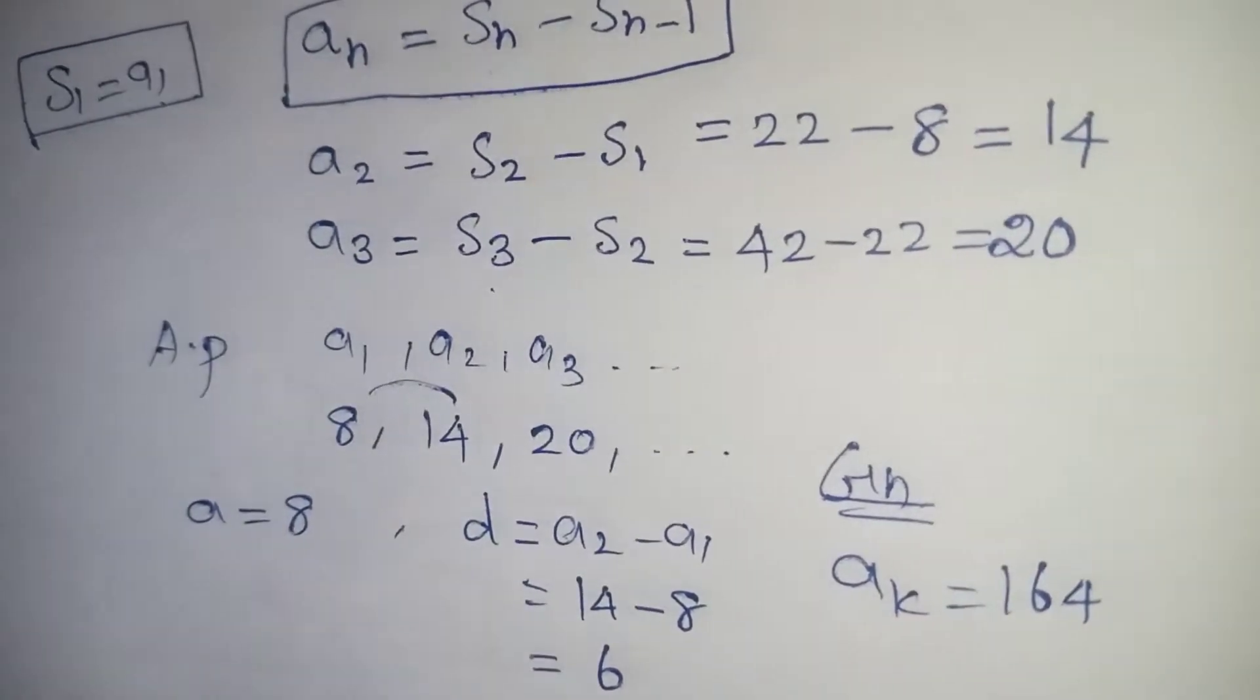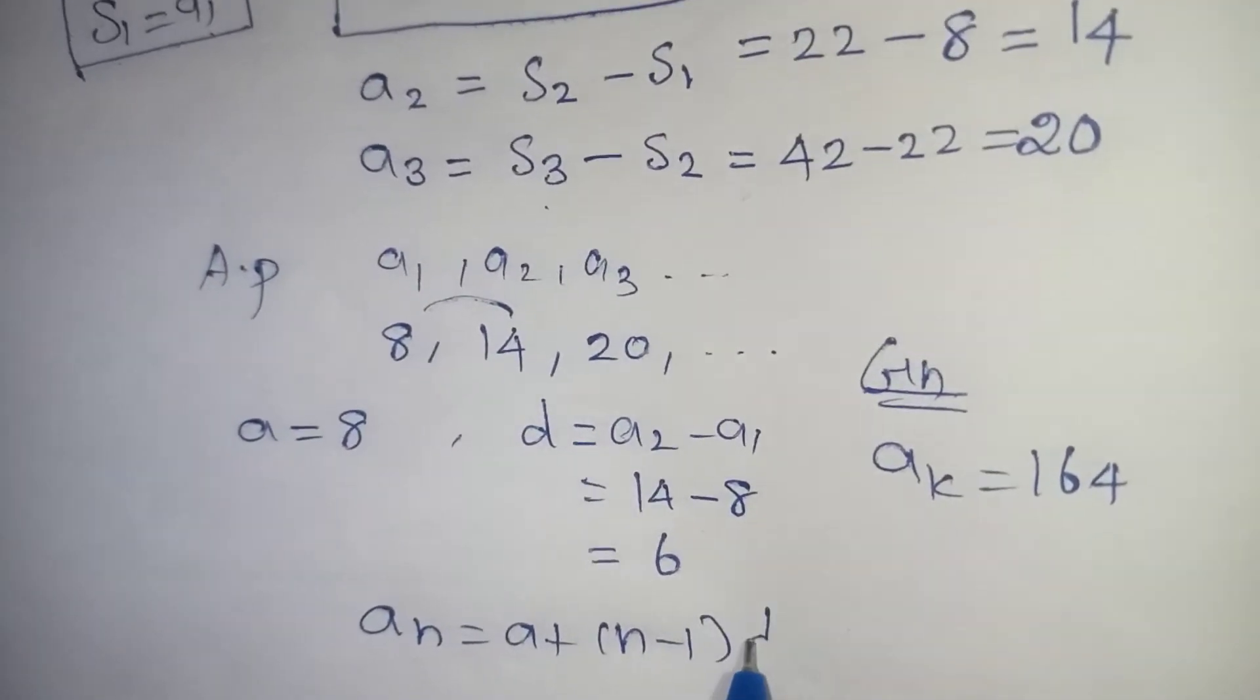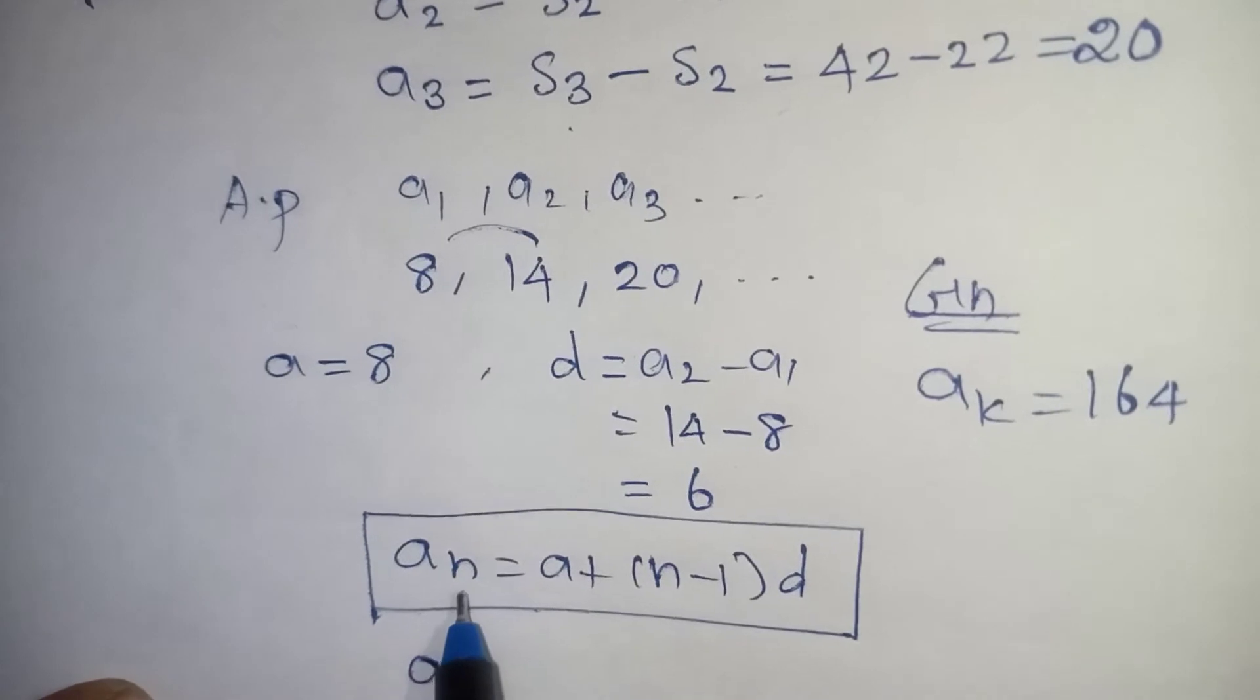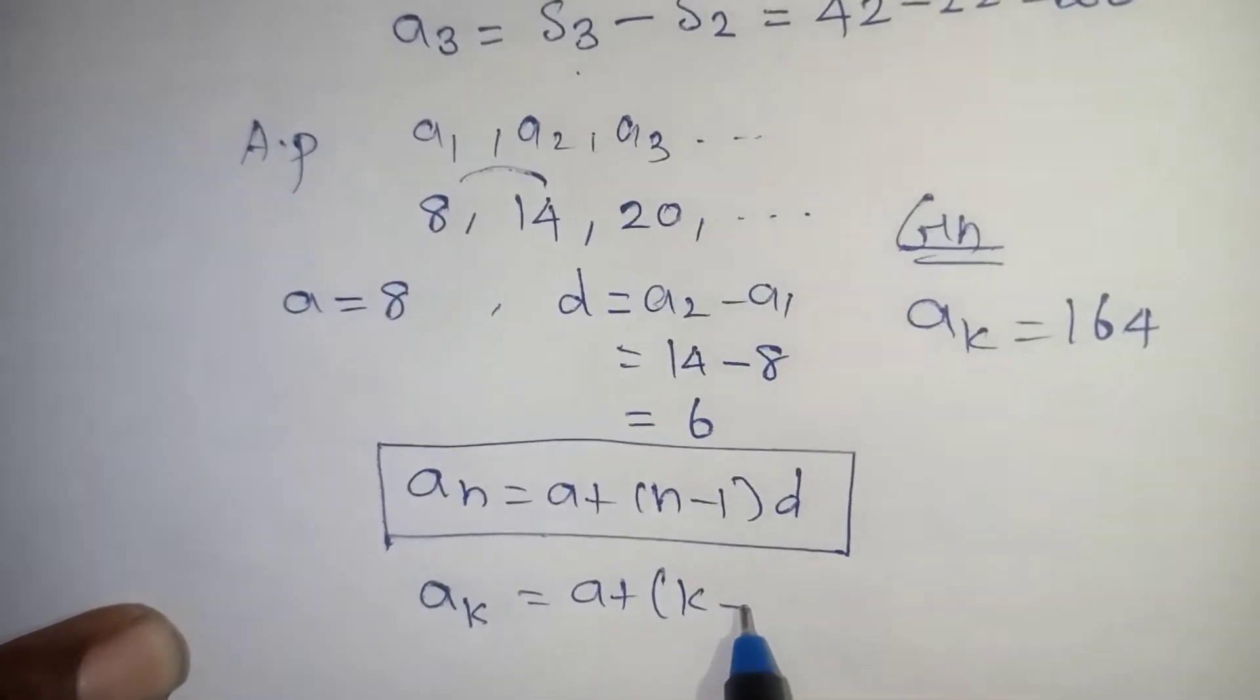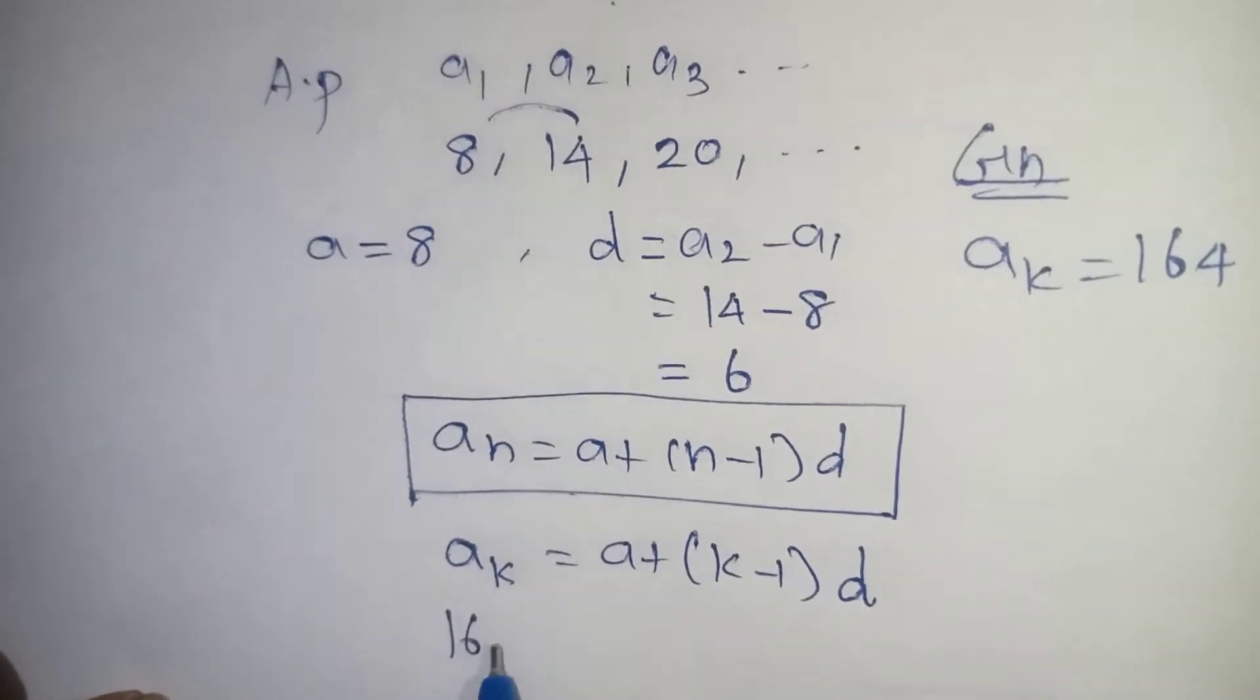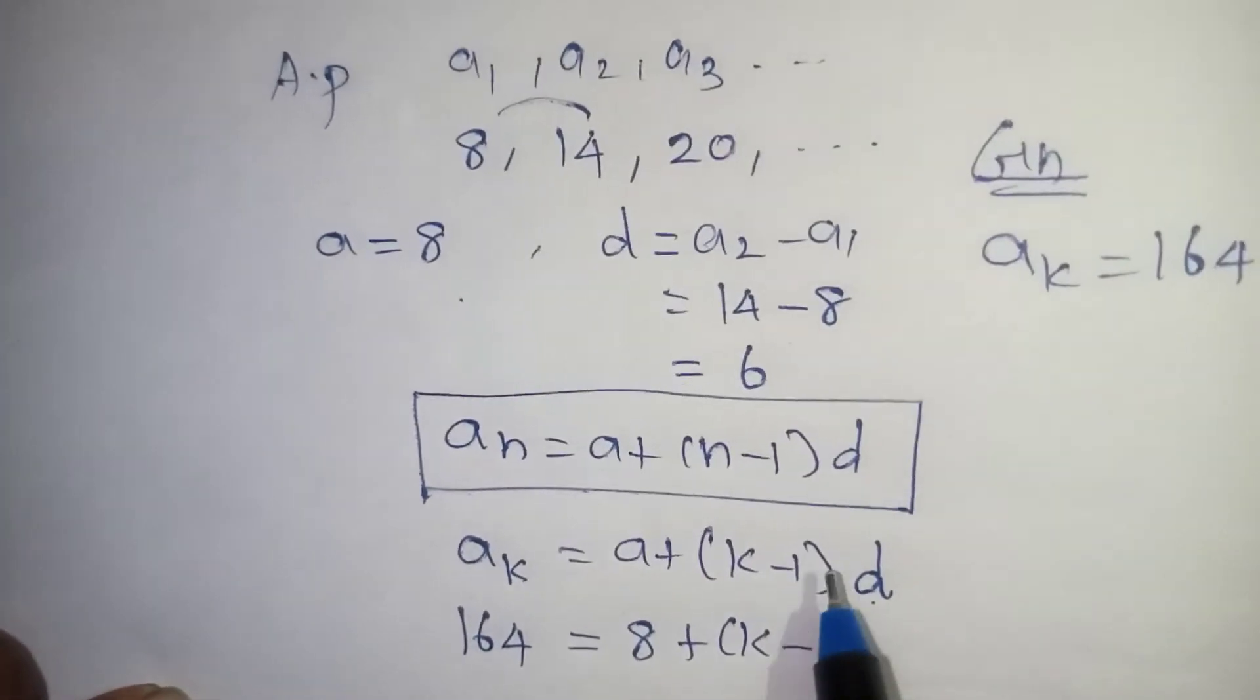Now we are going to apply the AN formula. Then we can find out what is the K value. So we know the basic formula AN equal to A plus N minus 1 into D. Now in the place of N we have given with the K. Now let us go for the K now. So wherever N comes you put the K, that is it. So AK is equal to A plus K minus 1 into D we have to take. Now substitute all the values we know.